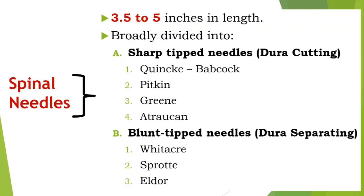Spinal needles are usually 3.5 to 5 inches long and are broadly divided into sharp tip and blunt tip needles. Sharp tip needles are also known as dura cutting, and blunt tip needles are also known as dura separating. Examples of sharp tip needles include Quinckes, Pitkins, Greens, and Atrocan, while blunt tip needles include Whitacre, Sprotte, and Eldor.